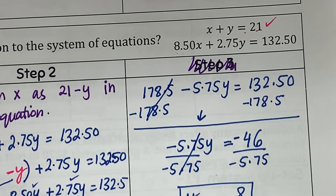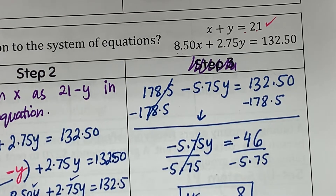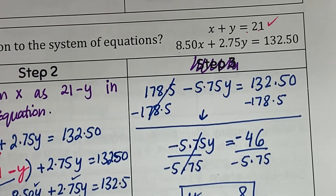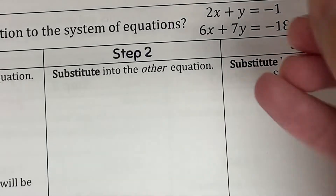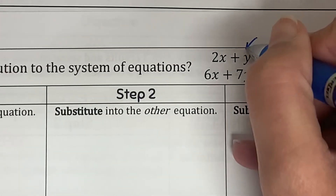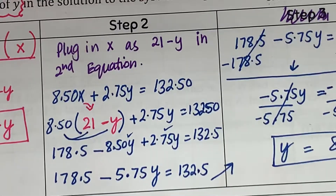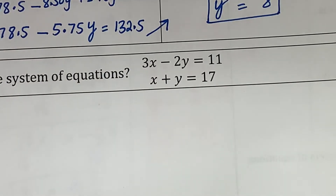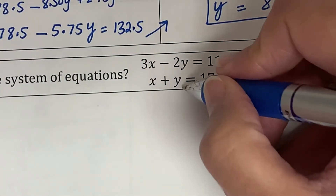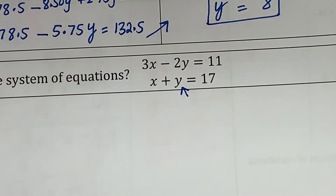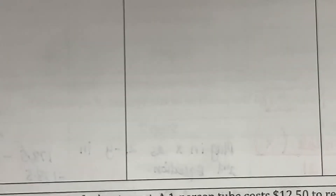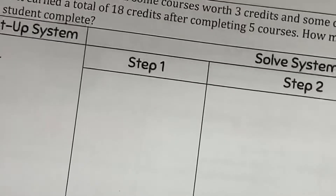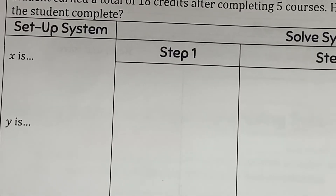I have y = 8. If you still need x, plug y back into the first equation and you can get it. For Example 5, isolate y from the first equation. For Example 7, you can isolate either variable since you need both x and y — I'd recommend isolating y since you're used to writing equations as y = mx + b.